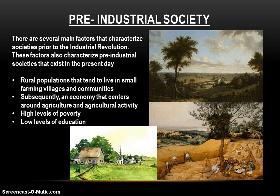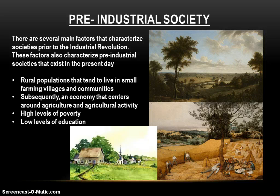Rural populations tend to live in small farming villages and communities. In the 1600s and 1700s, there were major cities in Europe — London, Paris, Madrid, Rome — but the vast majority of the population lived in rural areas. The vast majority of people were farmers. Pre-industrial society is largely characterized by a heavily rural population that lives in small farming villages, and subsequently, the economic activity centers around farming. That is what you are; that's what you do.